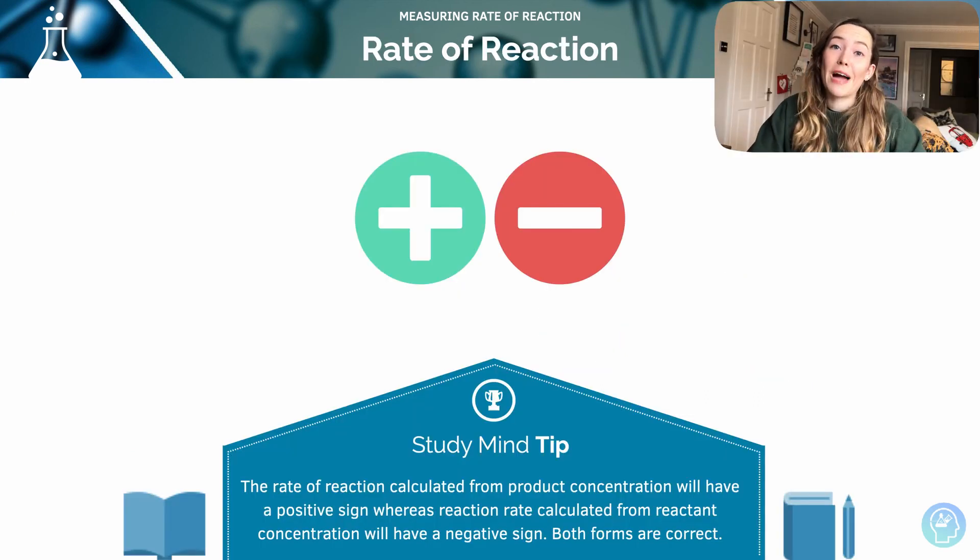Remember, the rate of reaction calculated from a product concentration will have a positive sign because you're making your product - you're going to have a positive gradient at any particular point. Whereas the calculated rate of reaction for a concentration line is going to be negative because that gradient is always going to be negative from the graph. But don't worry, it doesn't matter - both forms are correct.